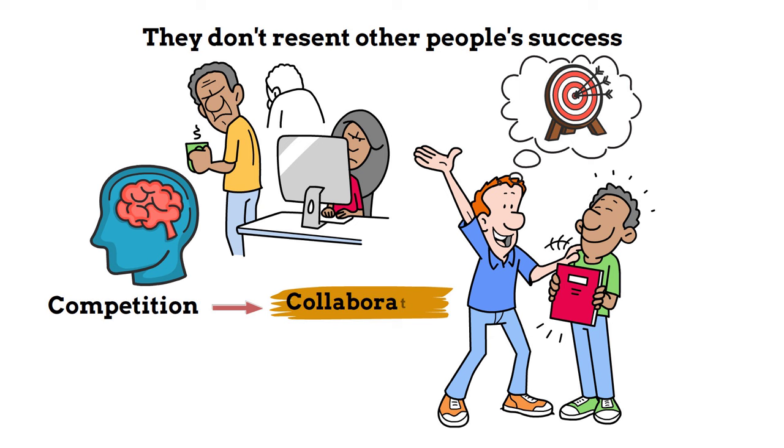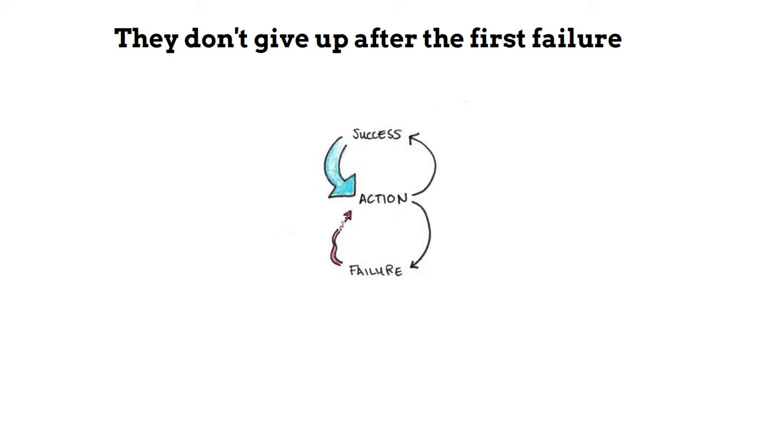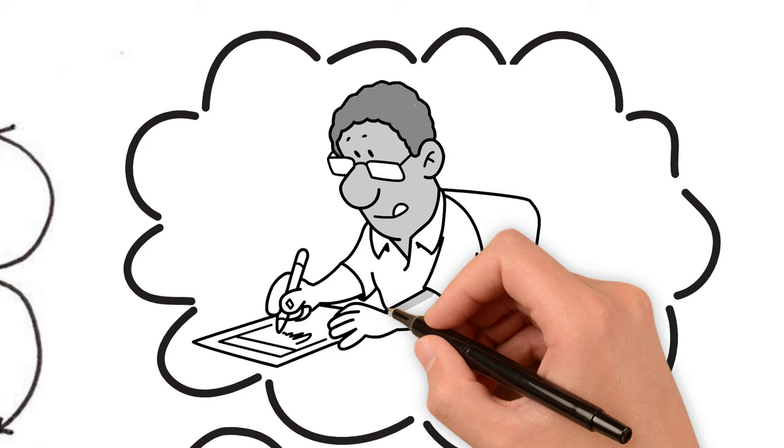Eight: They don't give up after the first failure. Failure is a natural part of the learning process, and mentally strong individuals persevere in the face of adversity. Recall a time when you failed at something. How did you bounce back, and what lessons did you take away from that experience?